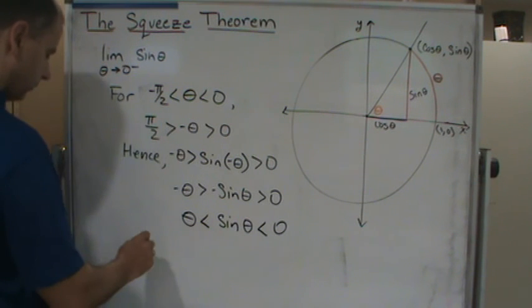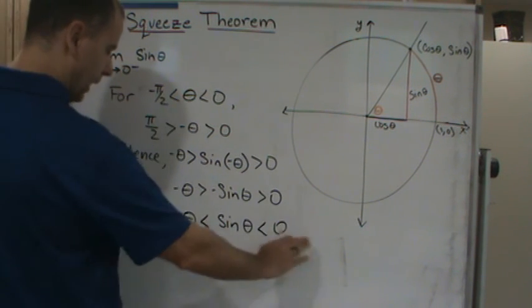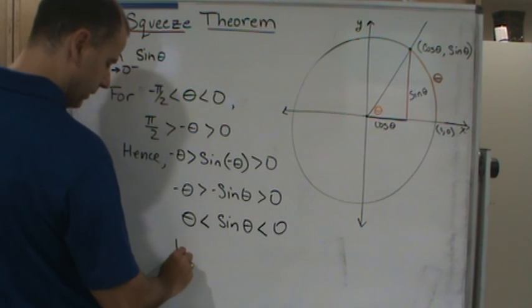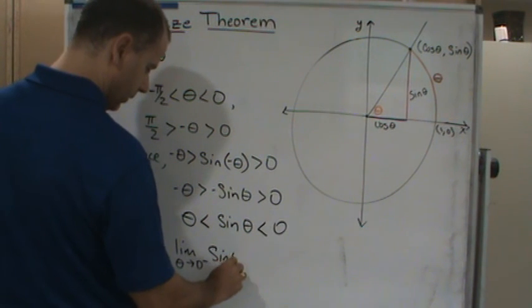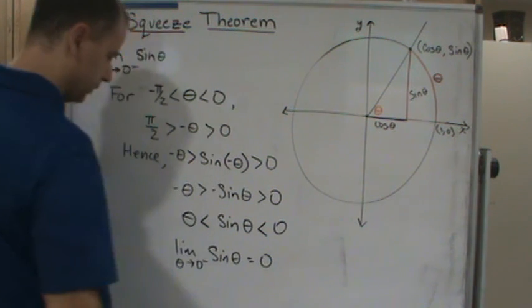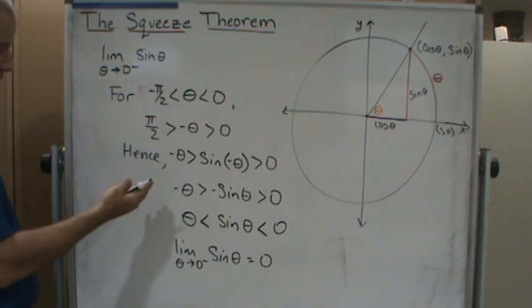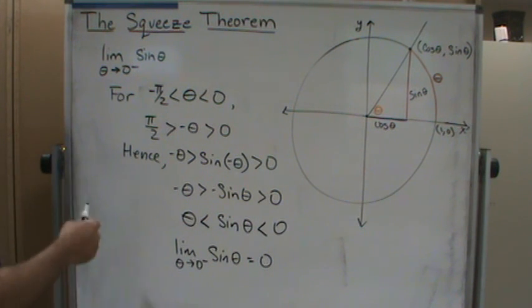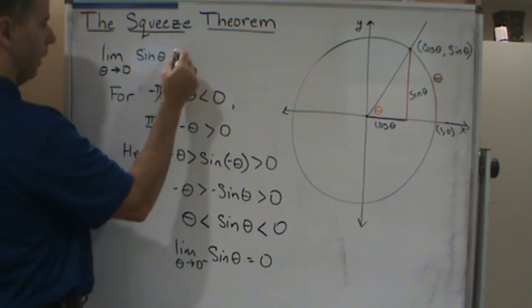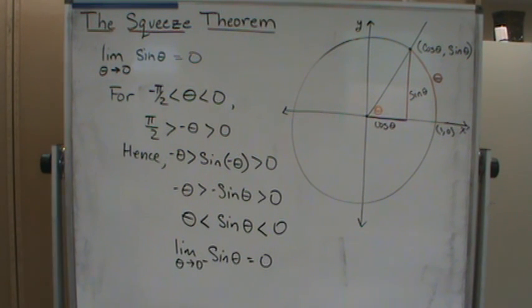Applying the squeeze theorem from the left, we find that the limit as theta approaches zero from the left of sine theta also equals zero. Since we've shown that both the right-hand limit and the left-hand limit of sine theta as theta approaches zero equal zero, we conclude that the limit as theta approaches zero of sine theta equals zero. That's the result we wanted — we'll continue to the next part next time.